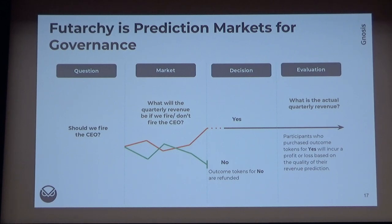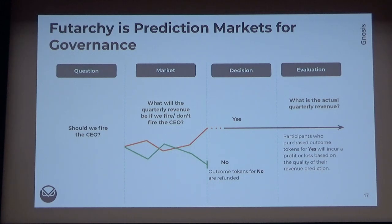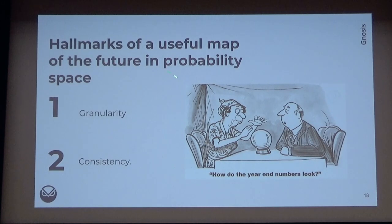Why are conditional tokens important for this? For this kind of decision-making, having a consistent view of the future is super important. If you have different contingent or correlated events, having one consistent model of the future on which to base decisions — where all information feeds into an accurate depiction of the probability space — is critical. If one thing changes, you want everything else in the model to change according to how these things are related.